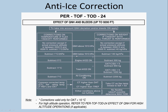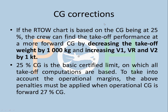There is also something called CG corrections, also in the FCOM takeoff performance section. All RTOW charts are based at 25% CG forward. The crew can find takeoff performance at a more forward CG by decreasing takeoff weight by 1000 kg and increasing V1, VR, V2 by 10. Penalties must be applied when the operational CG is forward of 27%. In this question, we assume CG is at 25%, so no CG corrections are applied — but this is important to know.